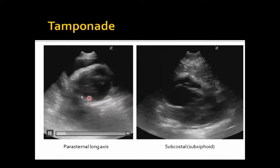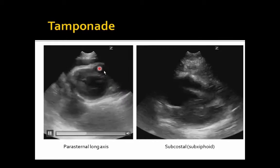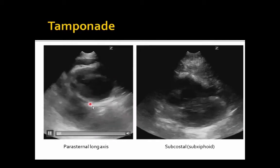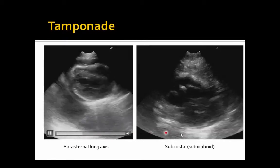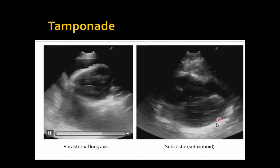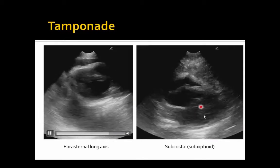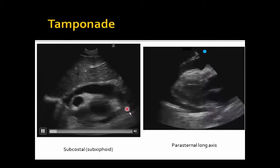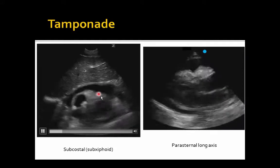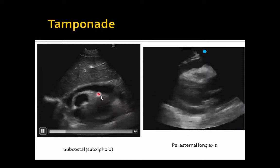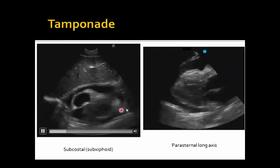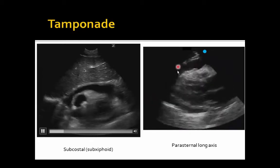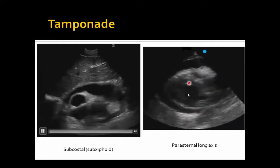A few more examples. Here we've got a significant pericardial effusion and a right ventricle that's denting in and not really filling, especially down towards the apex. We also have a pleural effusion down behind. In a subcostal view, we see a significant pericardial effusion and a denting right ventricle. In another example, there's a large amount of fluid around the heart — the right ventricle can't even fill; you can barely see it filling at all. And here in a parasternal long axis view, we see very nice denting of the right ventricle with a moderate to large pericardial effusion — echocardiographic evidence of tamponade.